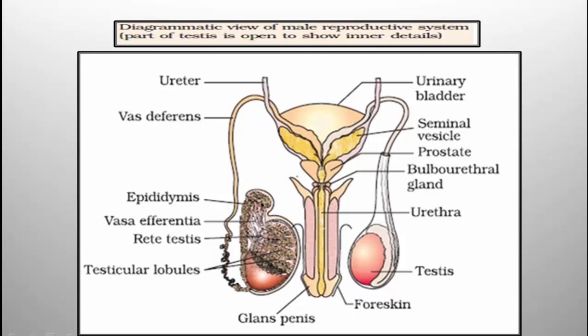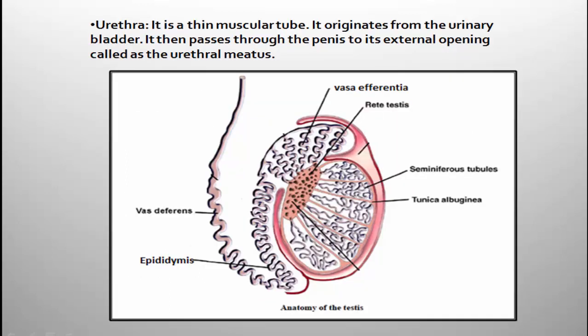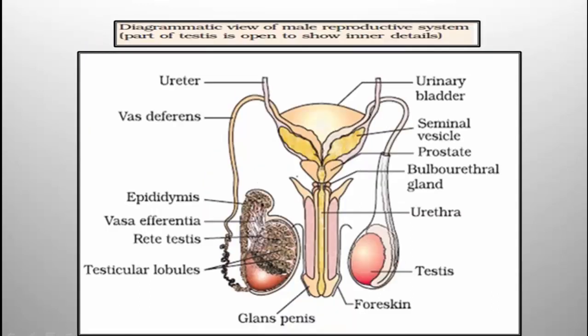The opening of the urethra is called the urethral meatus, and through the urethral meatus, the sperms are released outside the male body. These are the parts you have to remember. I hope it is clear — thank you.